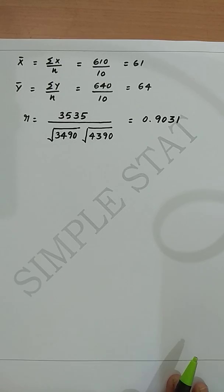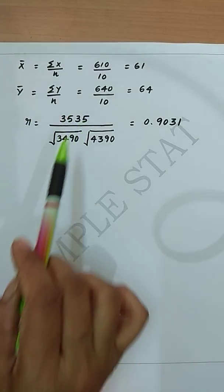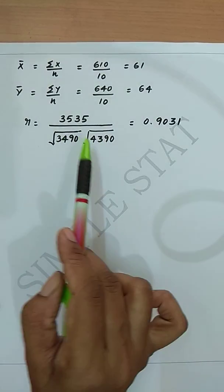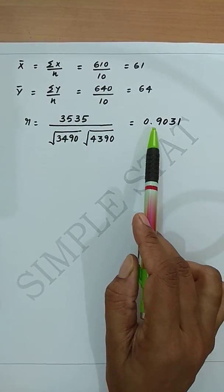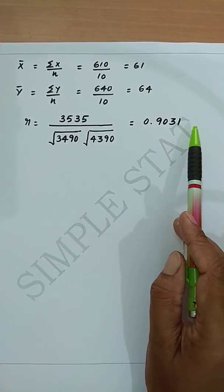Now substituting all these values in the formula, we get r is equal to 3535 divided by square root of 3490 into square root of 4390, which is 0.9031, which is the required coefficient of correlation.